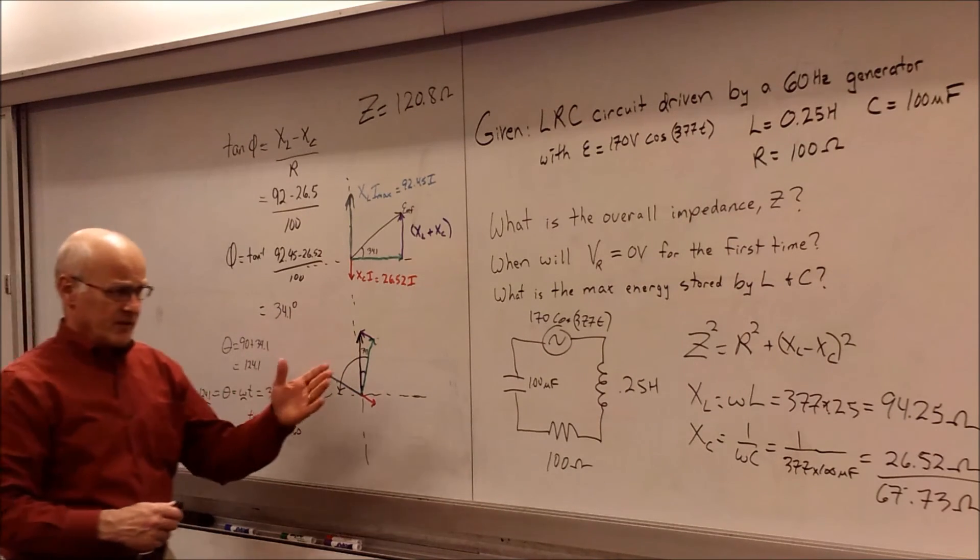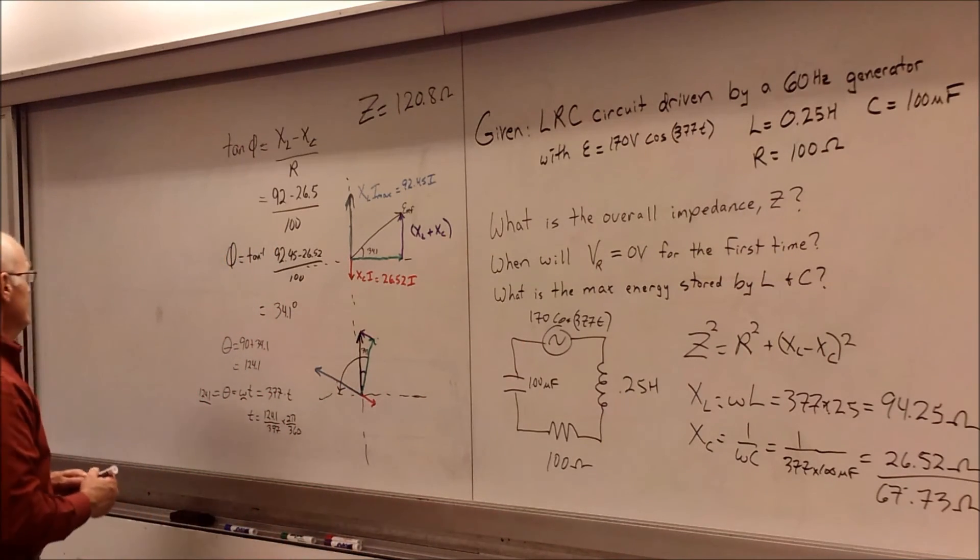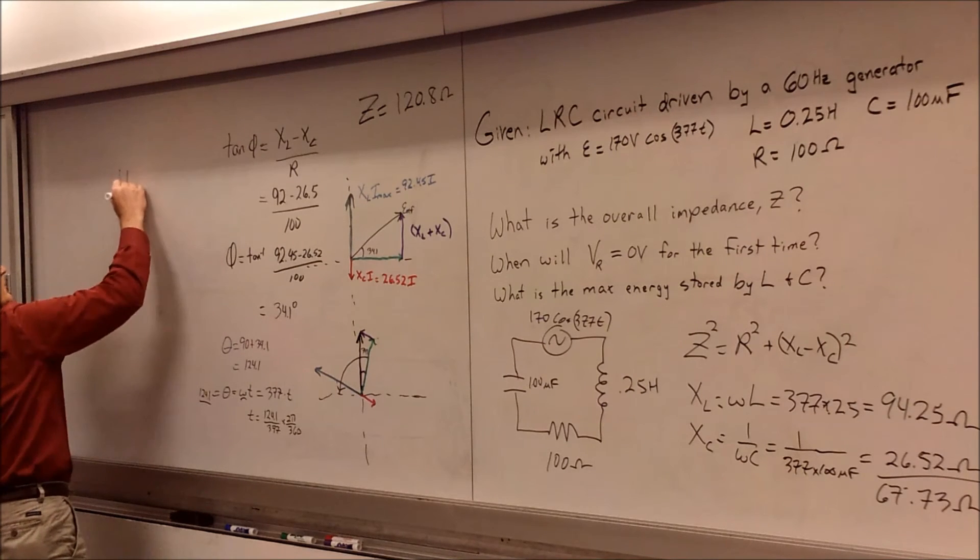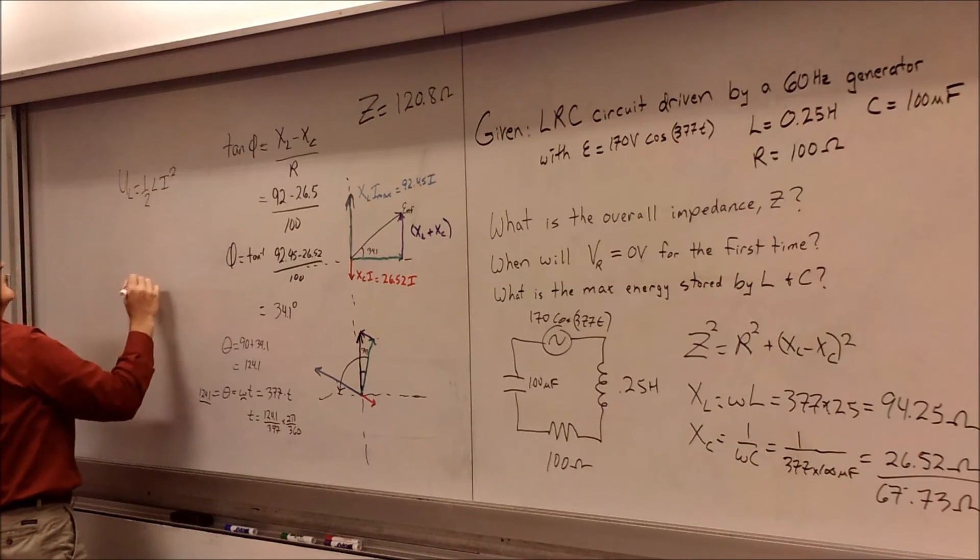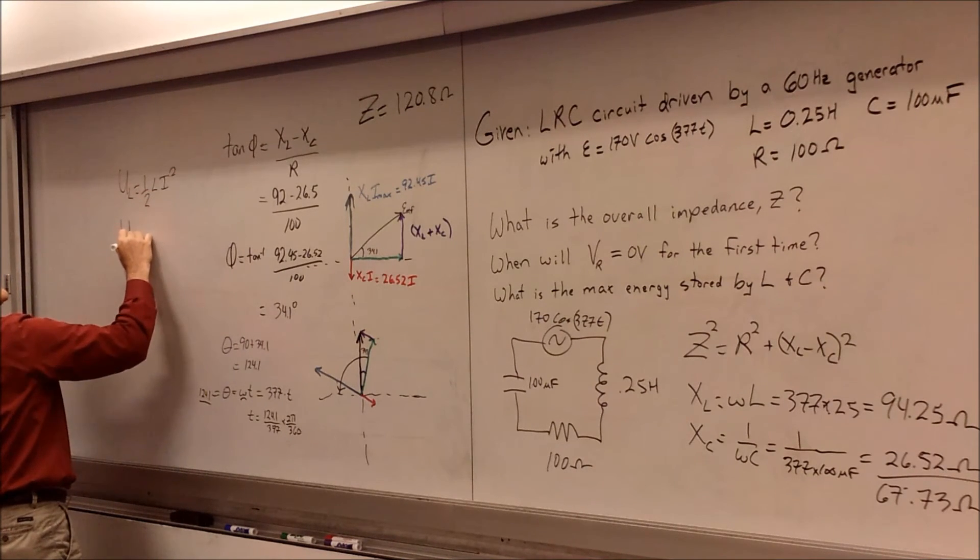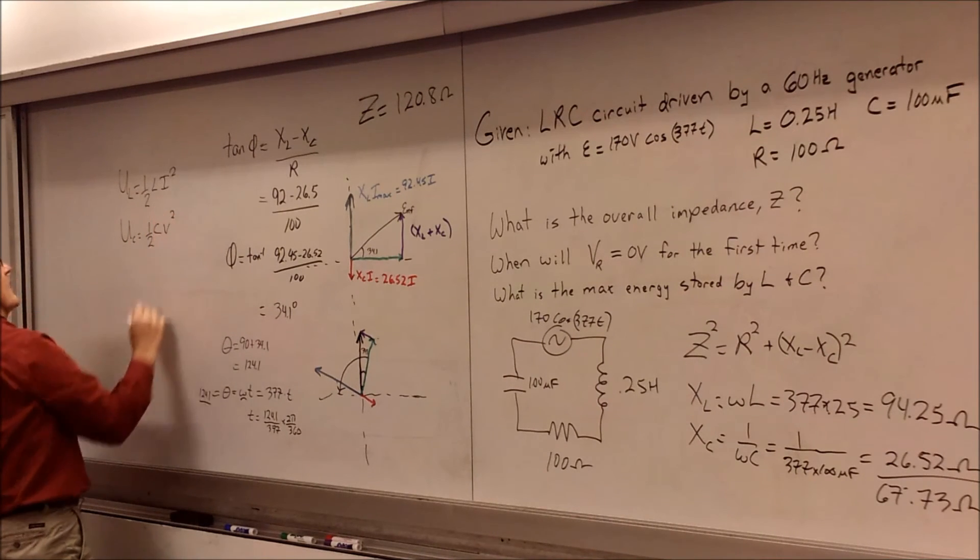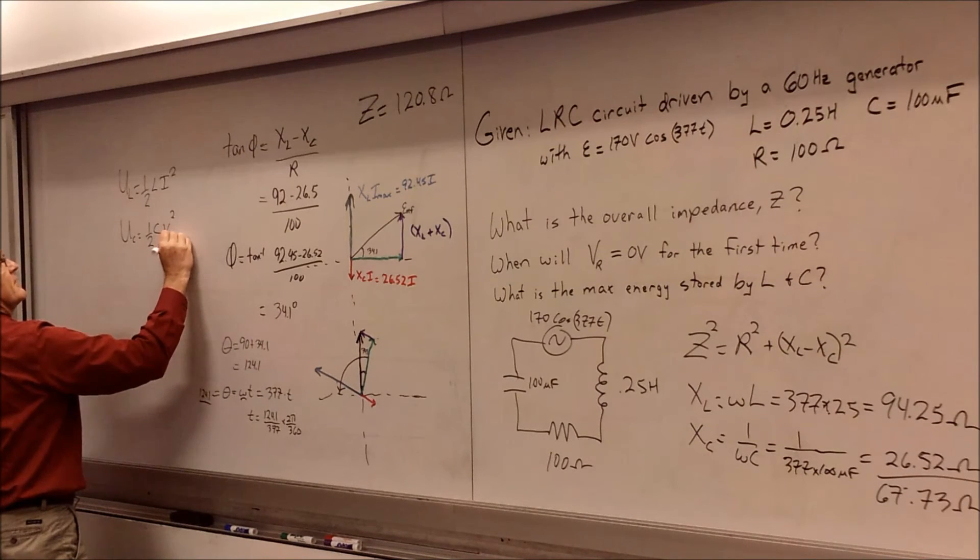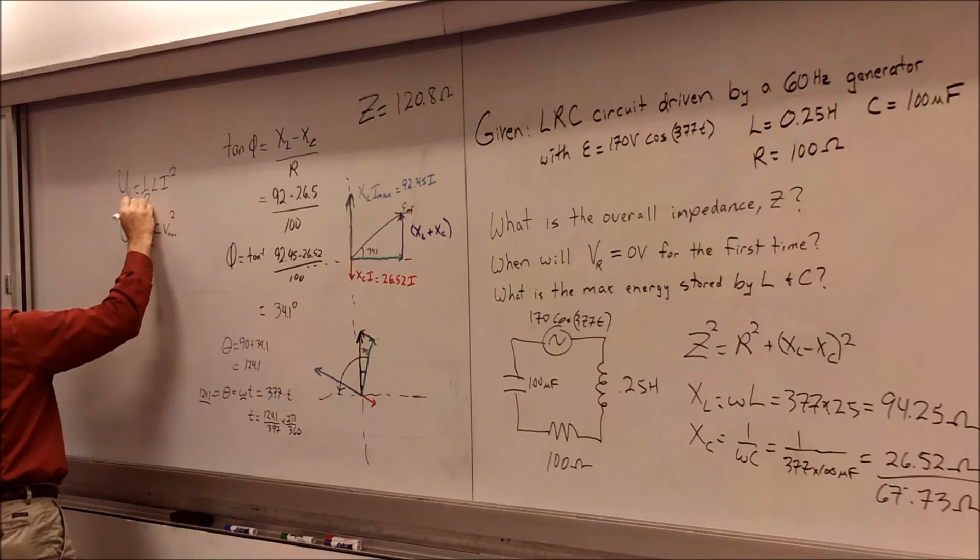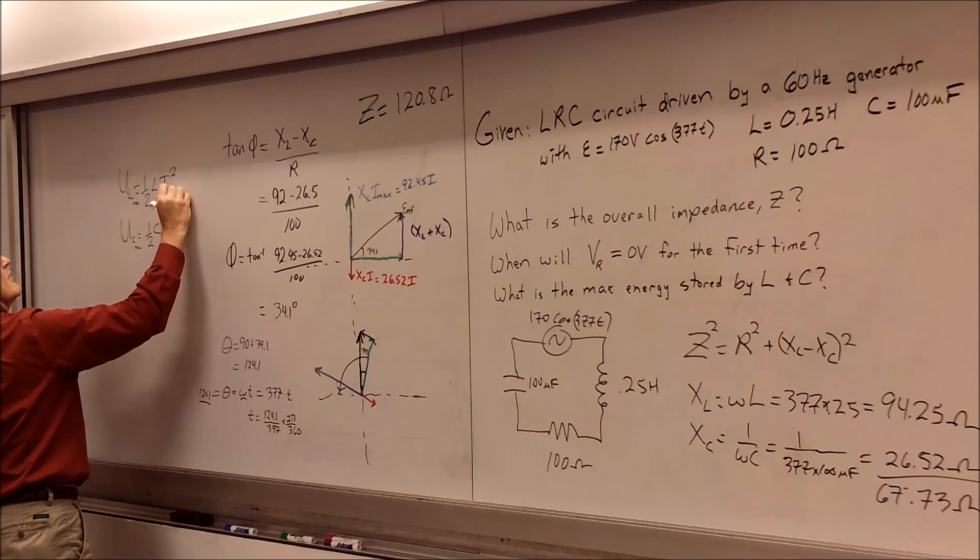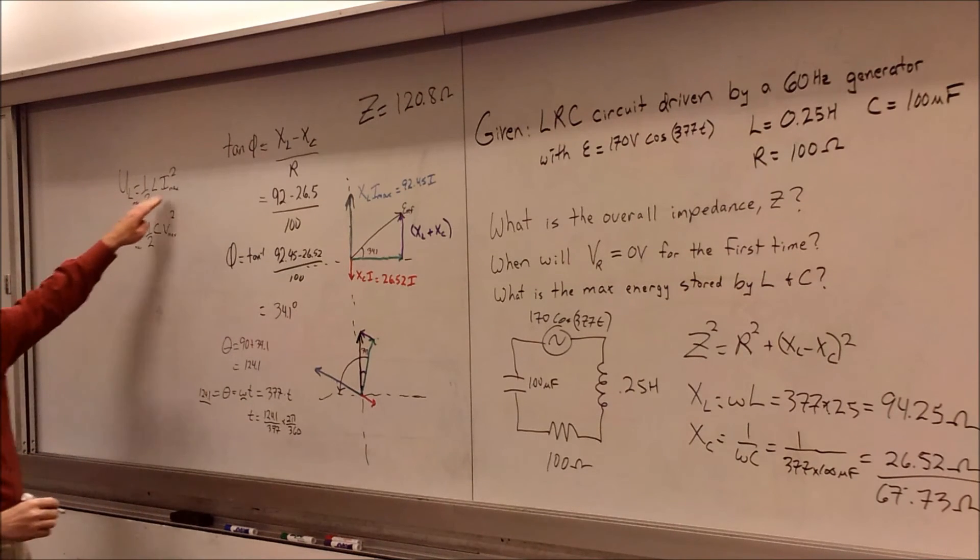And so that will tell us when the voltage from the resistor for the first time will rotate and be along the negative x-axis. And then we can ask, what is the energy that's going to be stored by the inductor and the capacitor? And so if we look at our equations for energy per an inductor, UL, it's going to be equal to one-half L I squared. And the energy stored by a capacitor is one-half C V squared. And the maximum value then would be whenever we have maximum voltage and whenever we have maximum current. Because inductance and capacitance are constants.